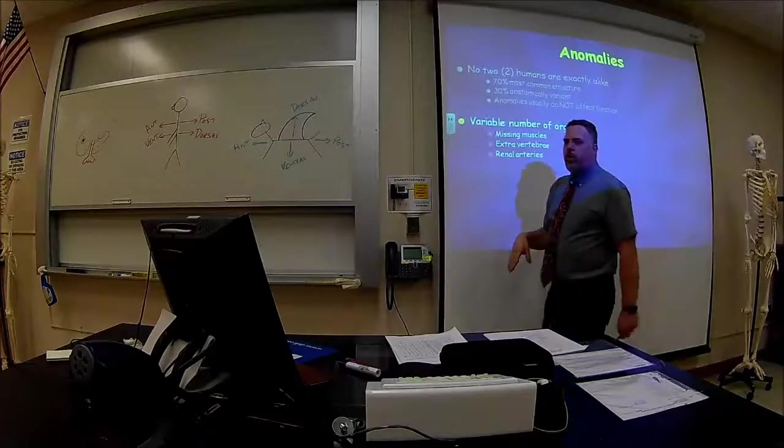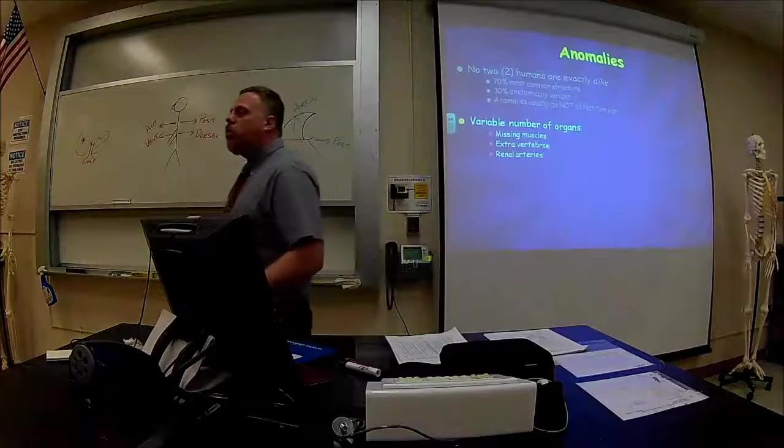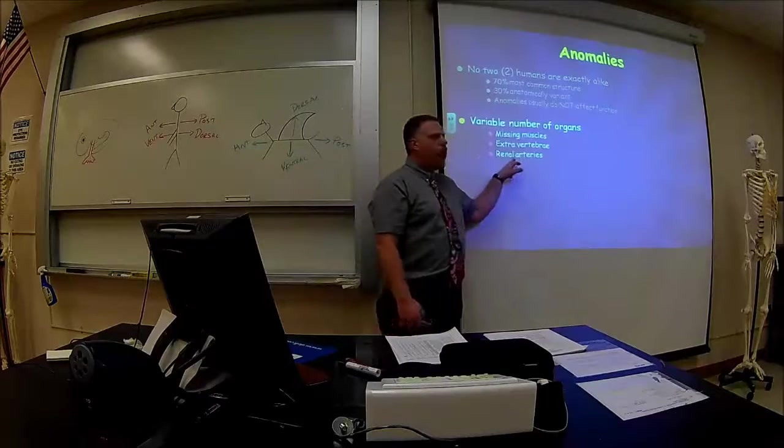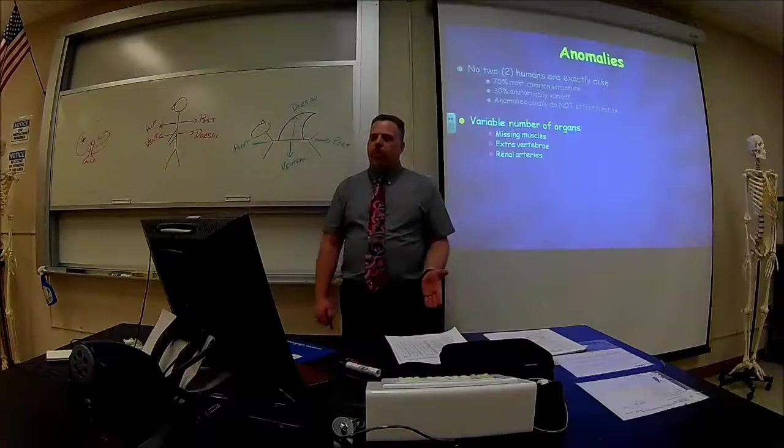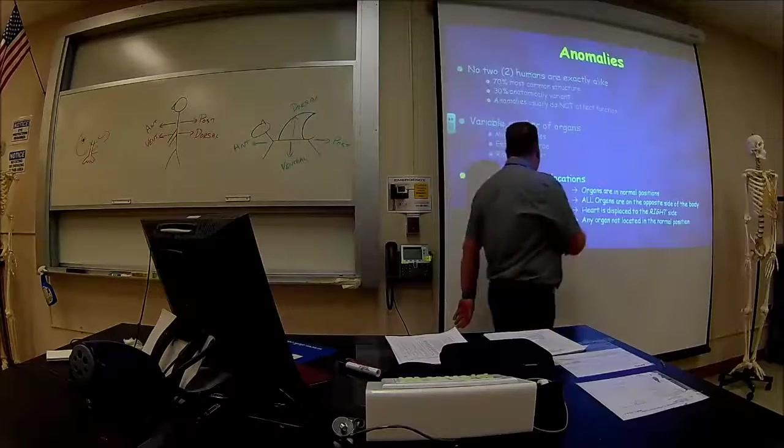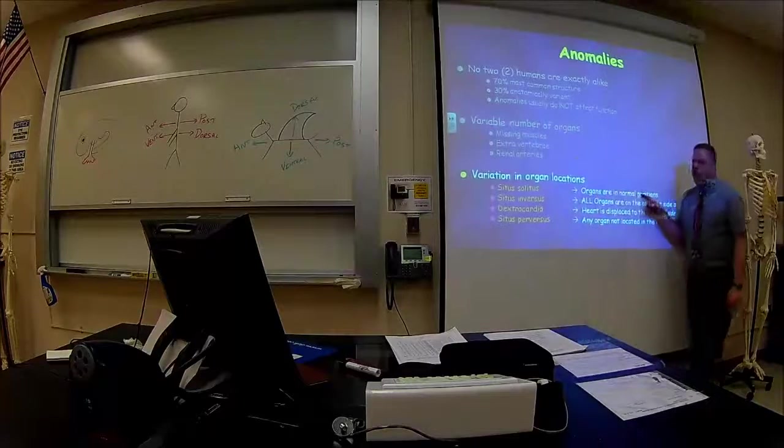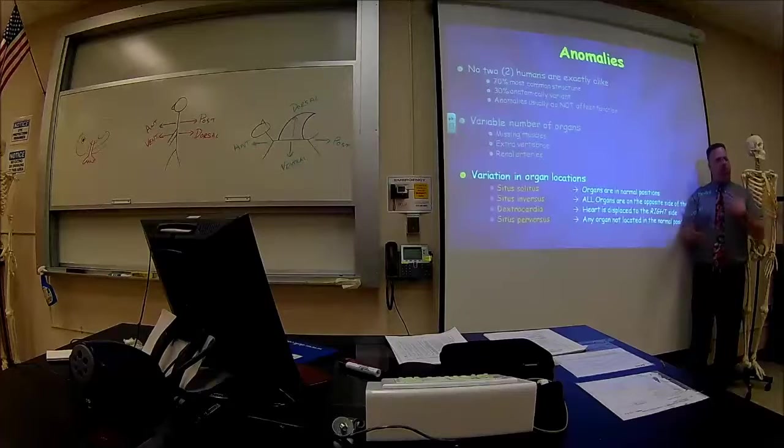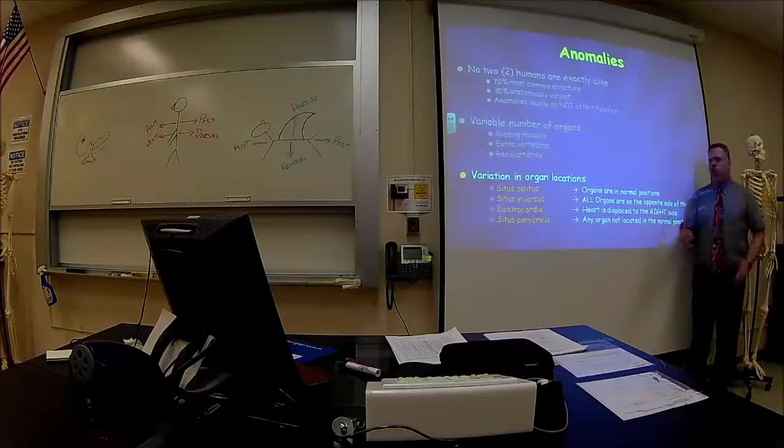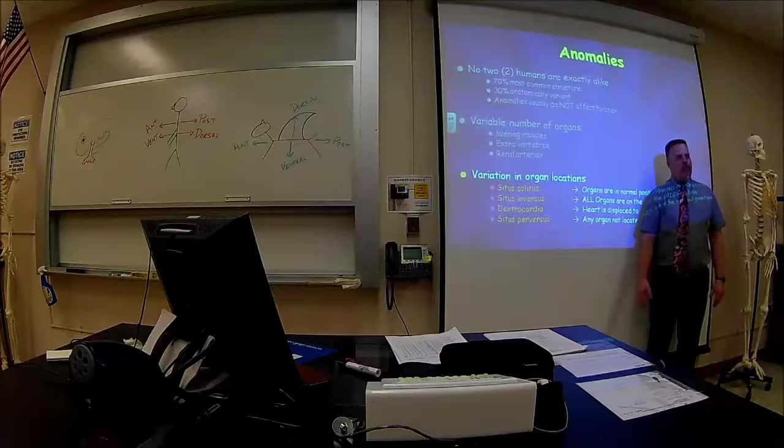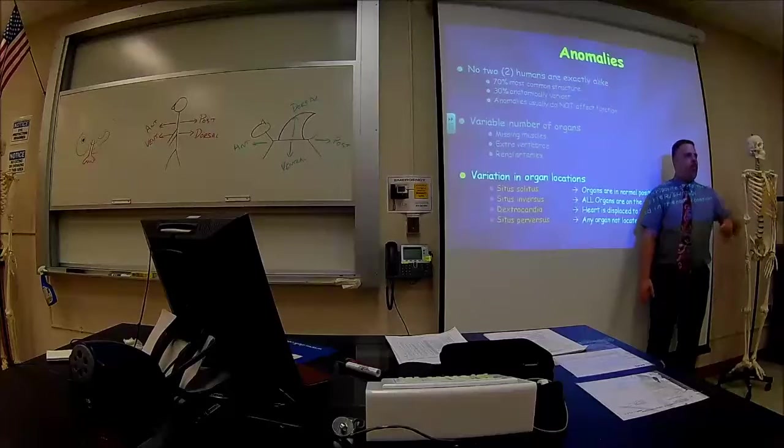It could be because there's missing muscles, we have an extra vertebra, we have renal arteries that shouldn't be there. Here's some variations. Situs solitus means organs are all in the normal place - maybe all of you have that. Because you're all working normally you wouldn't know if you had the other stuff unless it's an incidental finding.